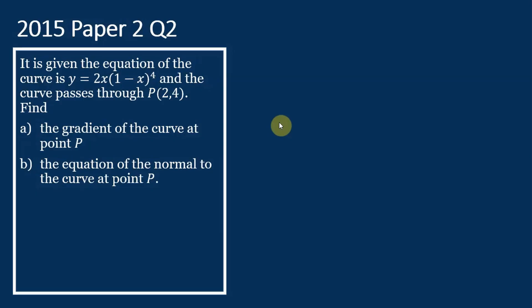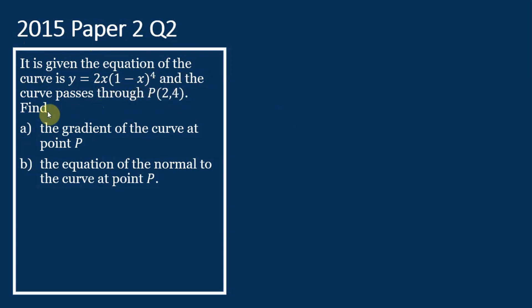Now let's look at this past exam question. This is a question from year 2015, paper 2, question 2. It is given that the equation of the curve is y = 2x(1 - x)^4, and the curve passes through point P(2, 4). Find the gradient of the curve at point P, and the equation of the normal to the curve at point P.